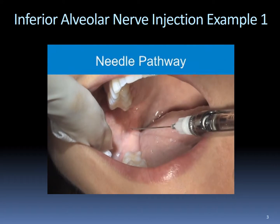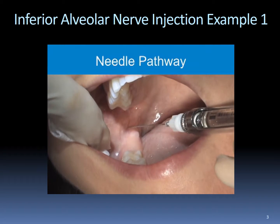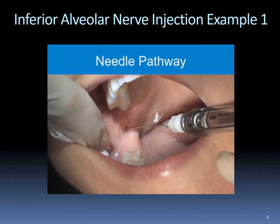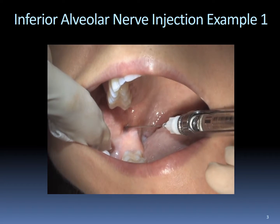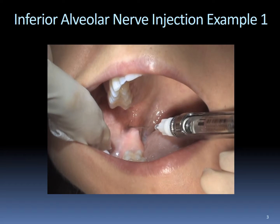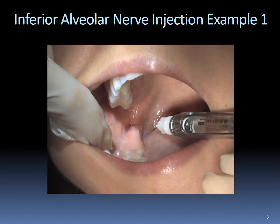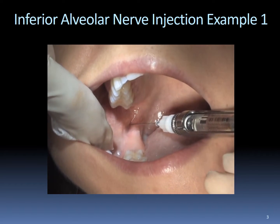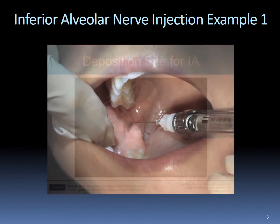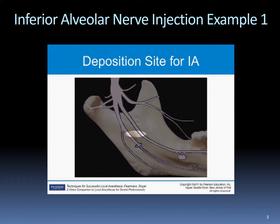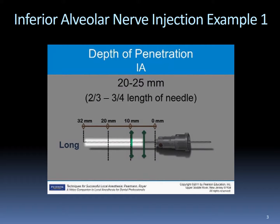For this injection, the barrel of the syringe should be over the opposite premolars and is parallel to and above the mandibular occlusal plane. As you start inserting, you may notice more resistance with this injection than in previous injections. Continue to advance the needle from the angle of the corner of the mouth until bone is gently contacted. The needle should be slightly above the mandibular foramen at this point. The depth of insertion is approximately 20 to 25 millimeters, or about two-thirds the length of the long needle.